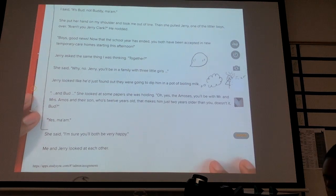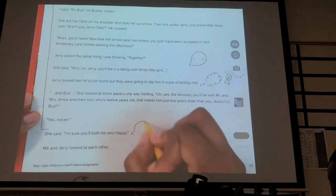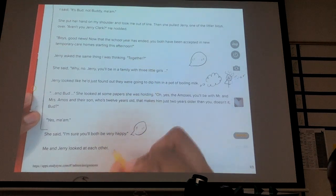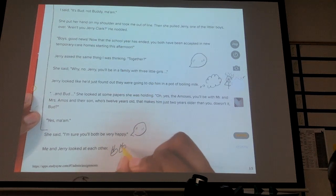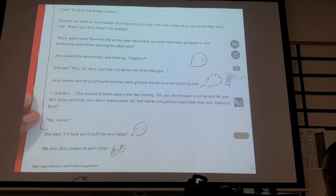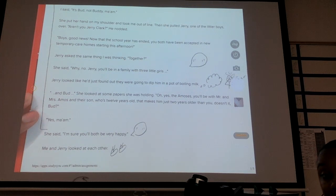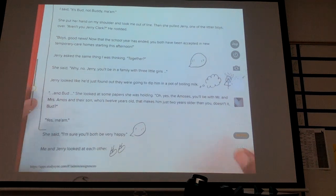She said, I'm sure you'll both be very happy. Me and Jerry looked at each other. So here's dialogue one more time. And then here's action. What is them looking at each other supposed to tell us? Without words, what are they thinking? Are they excited? Are they upset? Are they worried? What do you think? All right, let's turn the page.